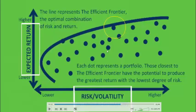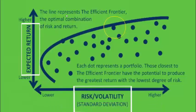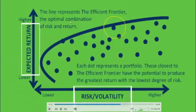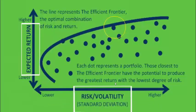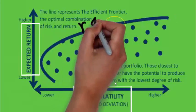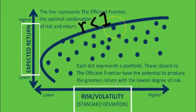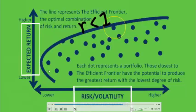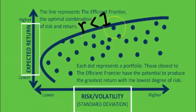The efficient frontier is the line which represents the optimal combination of portfolios — where return is higher for the same risk, or the same return is achieved with lower risk. This benefit is due to diversification, which reduces risk when the correlation between two stocks is less than one.